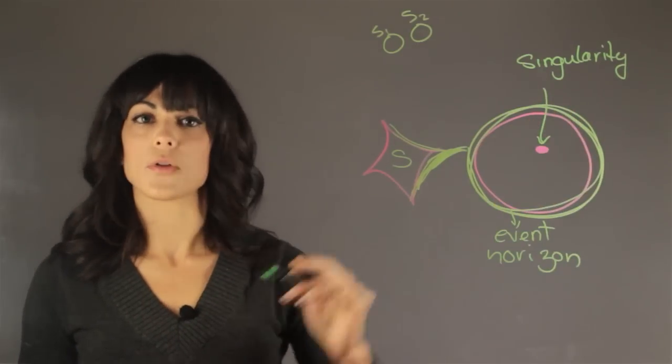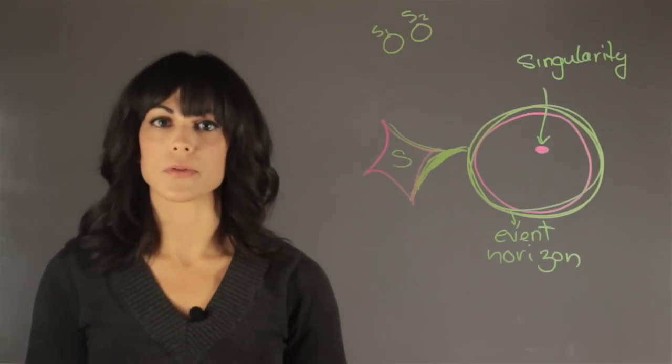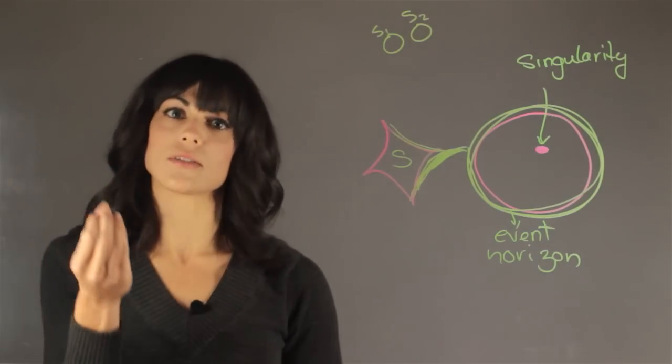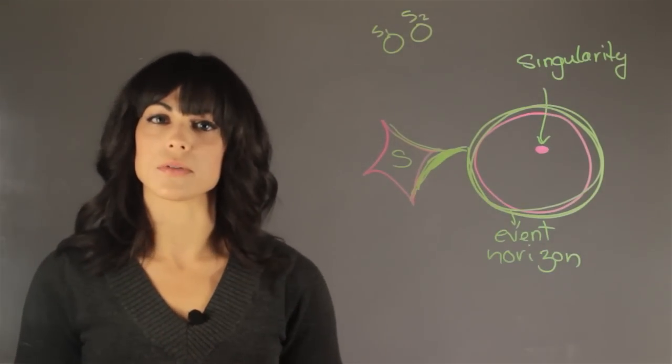And it's going to form something called the accretion disk. And this is how we detect most black holes. We see this accretion disk leaving the star. We know there is a black hole there that's swallowing something.